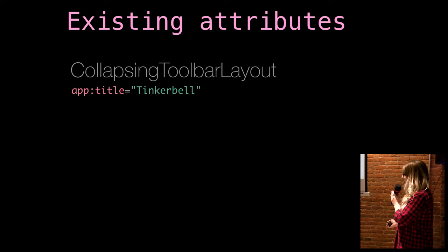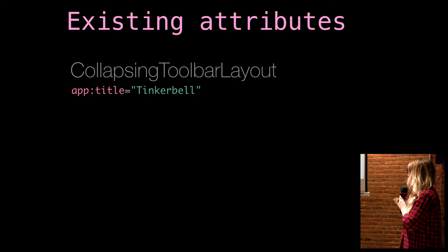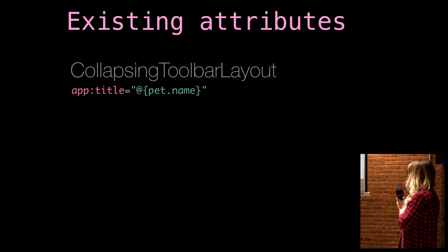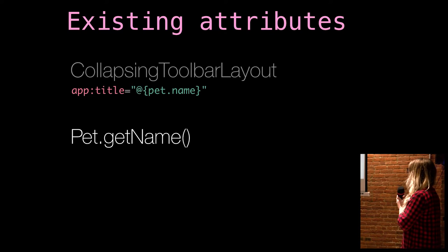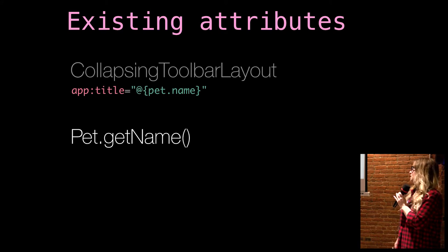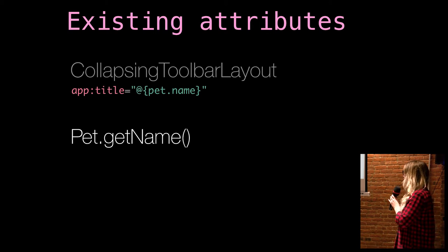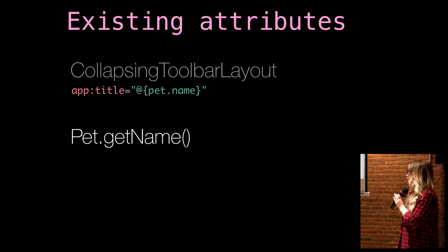So how does it do this? If you're using an existing attribute, like app:title equals a string — that would be for a static app. For data binding, you just say you want this to be equal to your pet's name. And there may not be pet.name, but there's pet.getName, which is the Java getter. So as long as you follow standard Java guidelines, data binding will just figure it out. You can use shortcuts like this.